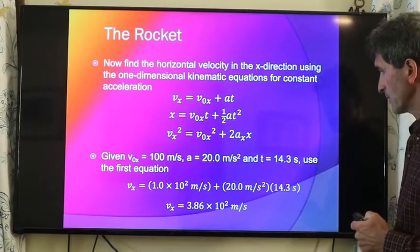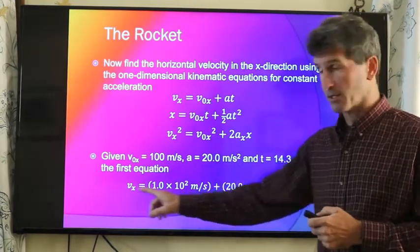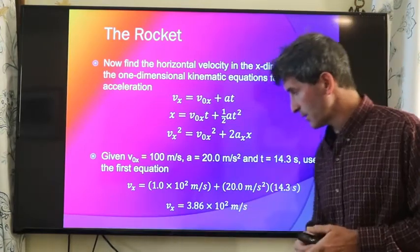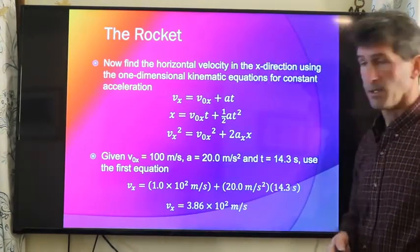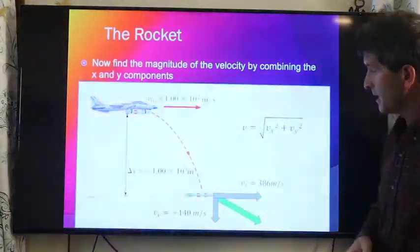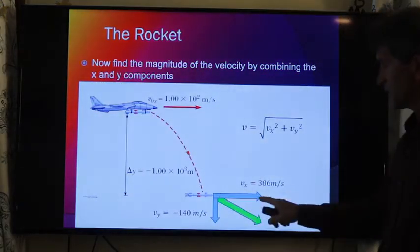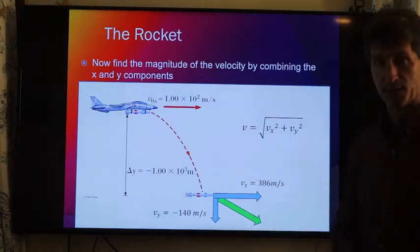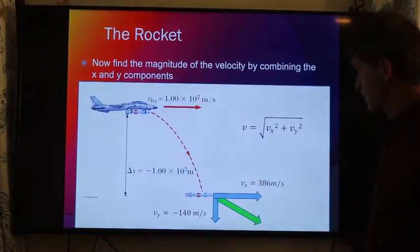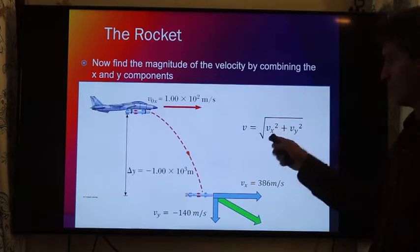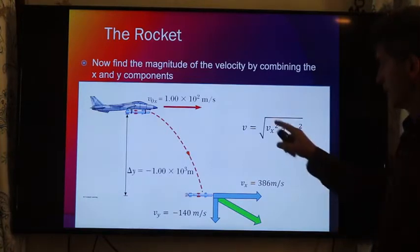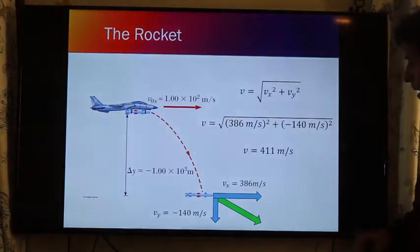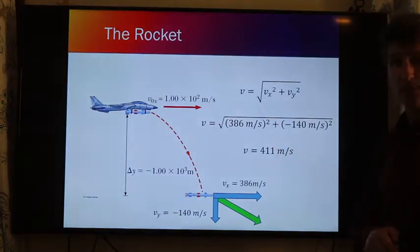It'll fall for 14.3 seconds. How fast is it going after 14.3 seconds? It's going 386 meters per second. So in the end, it has this much x velocity from the rocket engine and this much y velocity from free fall. The total speed can be calculated from the square root of the sum of the squares — it's traveling at 411 meters per second.